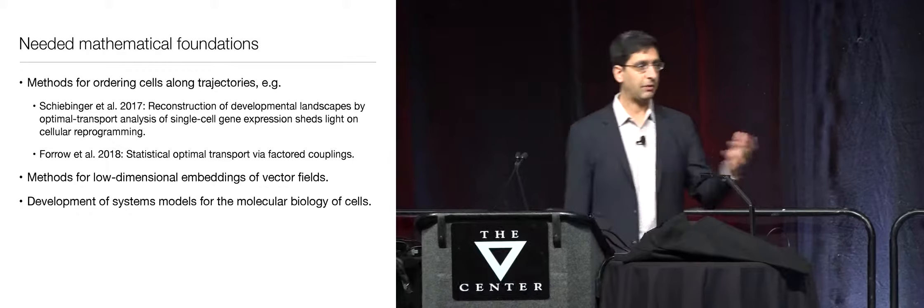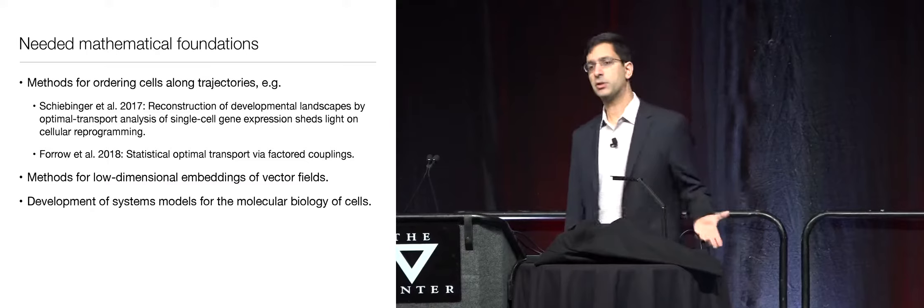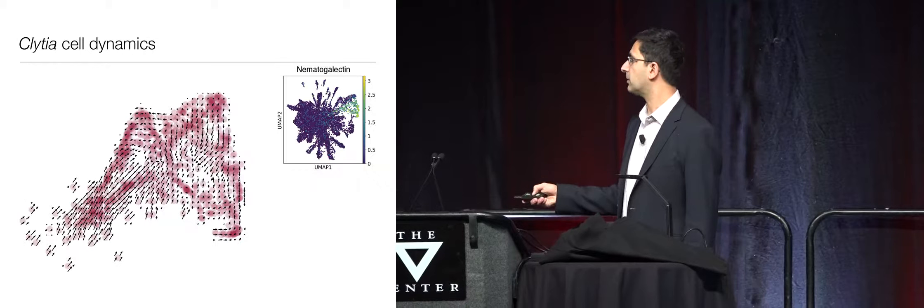By measuring these together, you can actually calculate the direction of transcription. They worked out nicely all the math of how you measure the parameters of these models. You can get pictures where every cell has an arrow, and the arrow comes out of averaging the direction of the individual RNAs in that cell — an overall direction the cell is going in.